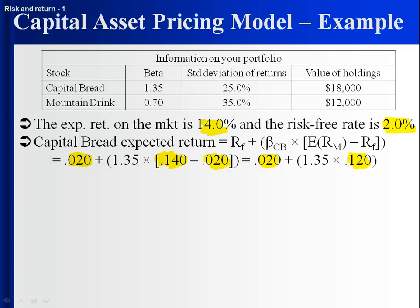But Capital Bread doesn't have an average amount of risk. Capital Bread has a beta of 1.35, so it has 135% of the average amount of systematic risk. Its risk premium should be 135% of what a stock would get with an average amount of risk — that's 1.35 times 0.12. The risk premium on Capital Bread is 16.2 percentage points. Add the 2% for no risk, and the expected return for Capital Bread is 18.2%.